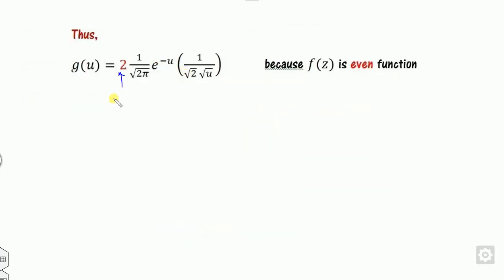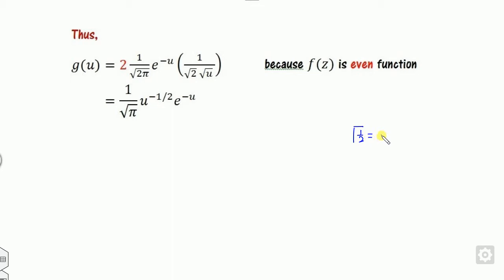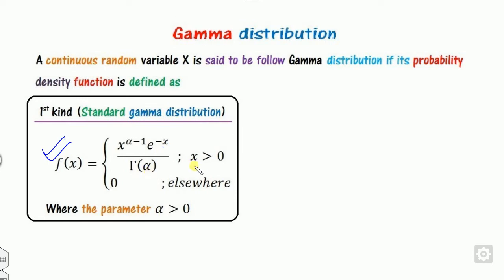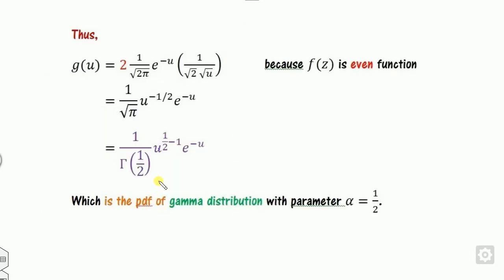After calculation, the factor of 2 cancels out, leaving 1 over sqrt(pi) times e to the minus U. Comparing with the gamma PDF, where gamma of one-half equals sqrt(pi), we can write this as a gamma PDF with alpha equals one-half. Since U = Z squared over 2 and Z squared is always positive, U is greater than 0, confirming this is a valid gamma distribution.